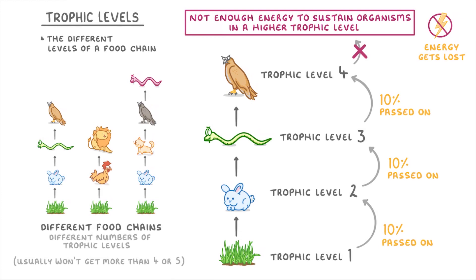So if we started with 1000 joules of energy in trophic level 1, that would be reduced to 100 joules in trophic level 2, then 10 joules in trophic level 3, and only a single joule by trophic level 4.